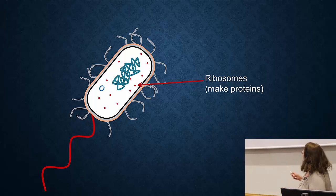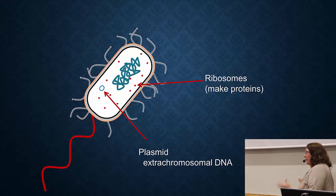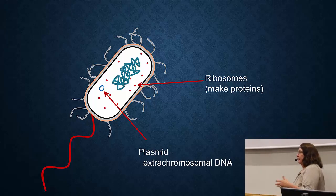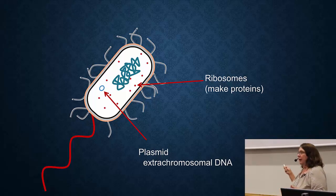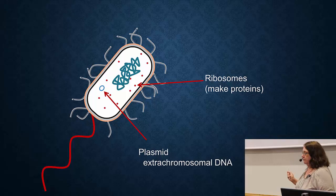The last thing is this little blue circle, which I've indicated as a plasmid. A plasmid is also DNA, but it's extra DNA — it is not part of the normal chromosome. It's an extra piece of DNA which, in this course, becomes really important because plasmids often carry antibiotic resistance genes. They're usually not required for the cell and can move around between cells.